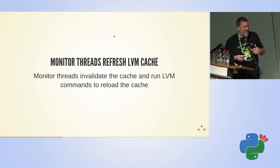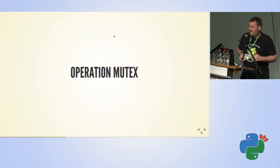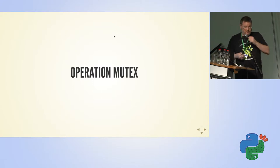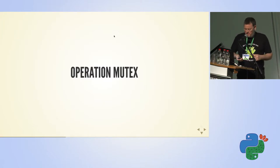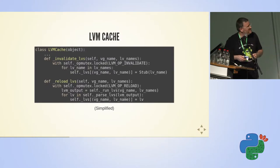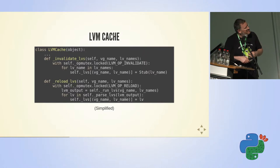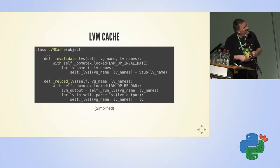So every five minutes the monitor threads will wake up, invalidate the cache, and reload the cache from storage. When you have 50 storage domains and you want to invalidate the cache and all of them are running together, you need to synchronize them in some way. So we have a special mutex for this. This is an example from the VDSM LVM cache code — we can see the code that invalidates the logical volume cache and the code that reloads the logical volume cache. You can see that we take a lock before we invalidate or reload — we take the operation mutex.